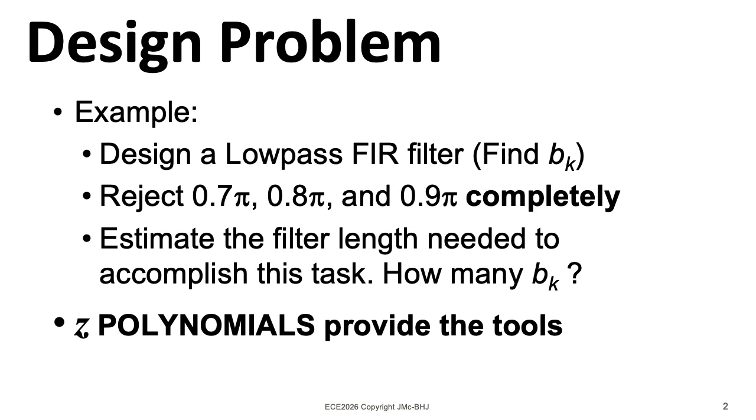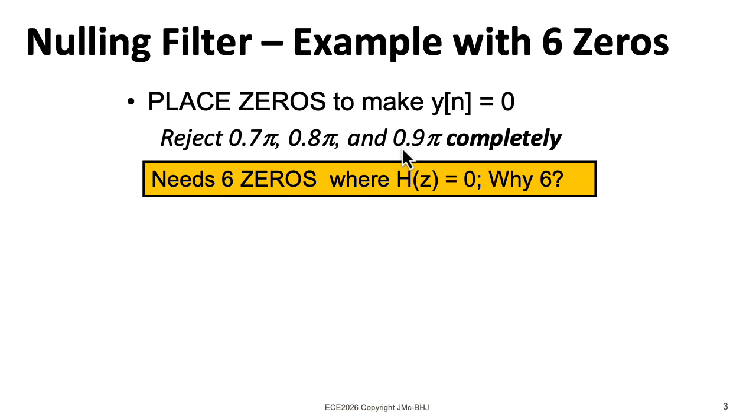Z-transforms provide a tool for thinking about these kinds of problems. So in general, if we want to kill off three frequencies, we're going to need six zeros, because each frequency will need a conjugate pair of poles.